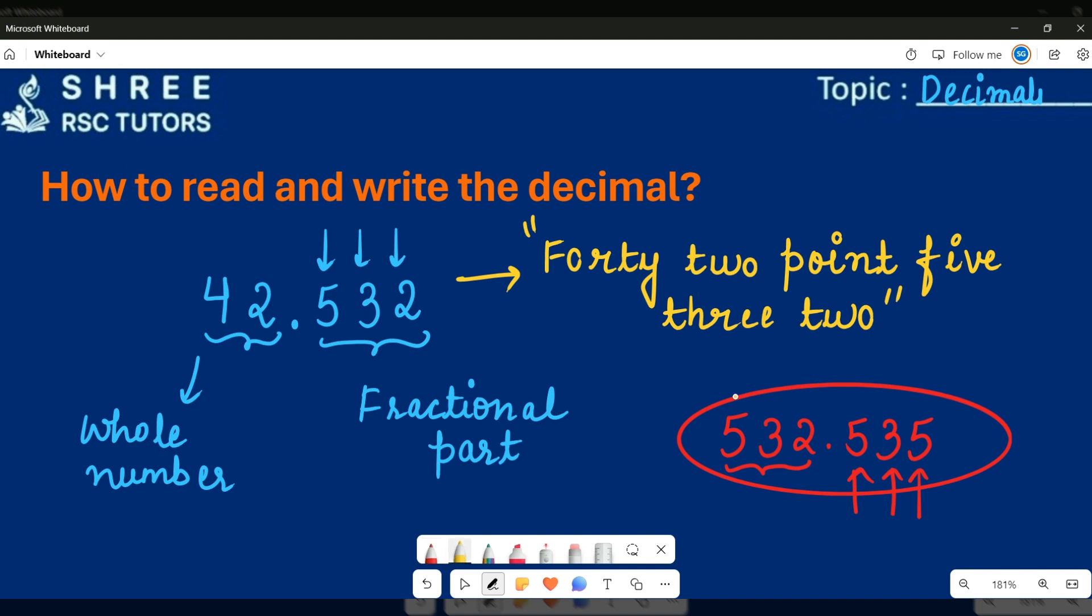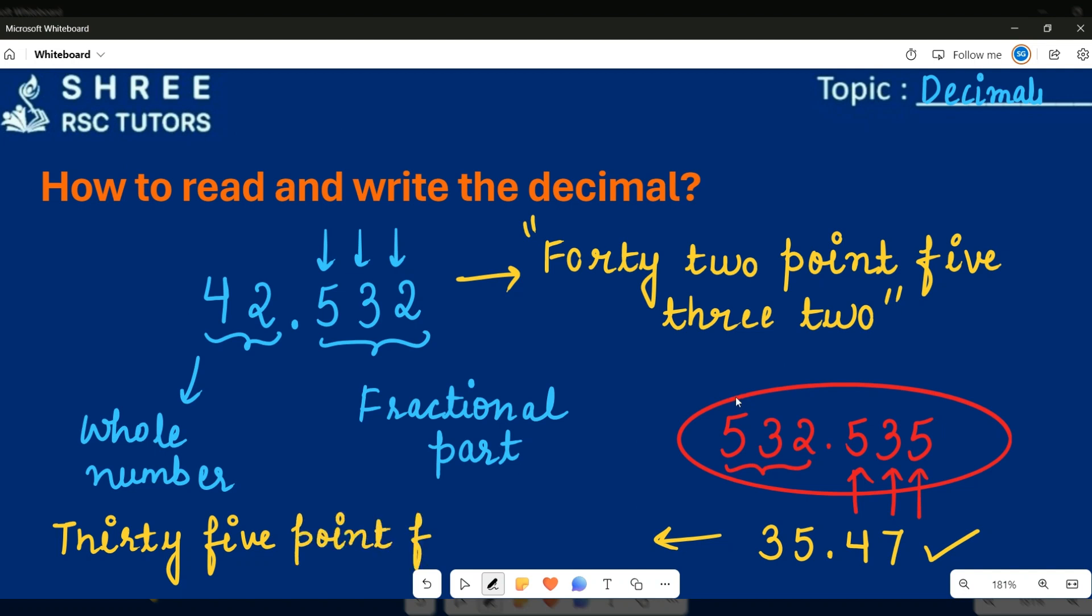Let's take another question. For example, we have this: 35.47. So we will read it as 35.47 and we will write it like this. How we are reading it, and in the same manner we have to write it like 35.47.